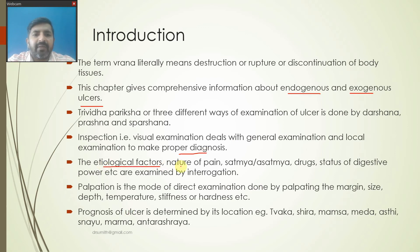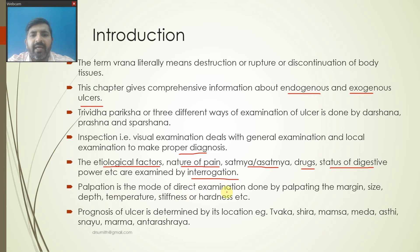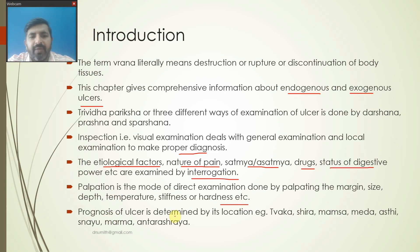Etiological factors, nature of pain, Satya Satya, drug, and status of digestive power are assessed by interrogation or Prashna. Palpation or Sparshana is the mode of direct examination done by palpating the margin, size, depth, temperature, stiffness, and hardness of the ulcer. This is how the three Pariksha methods are performed.